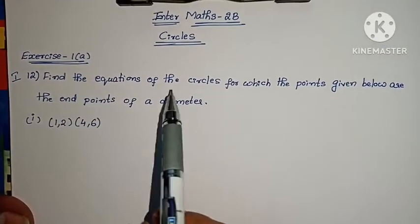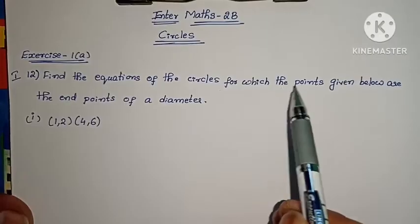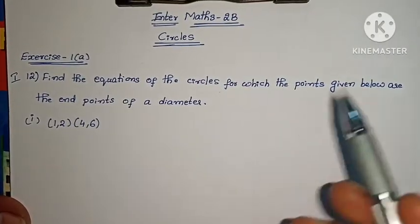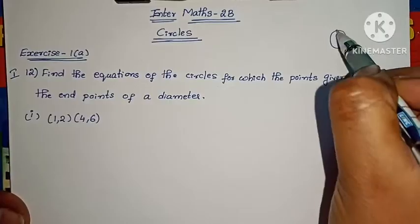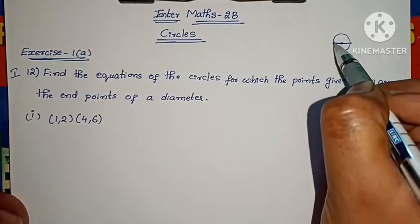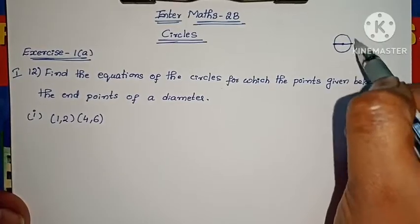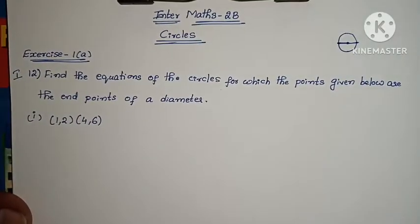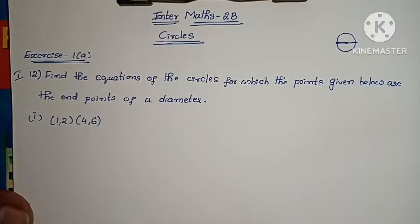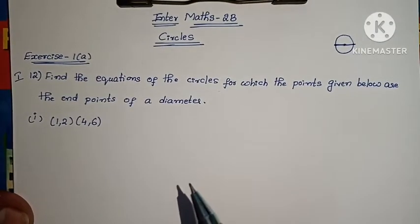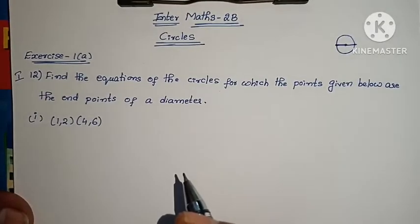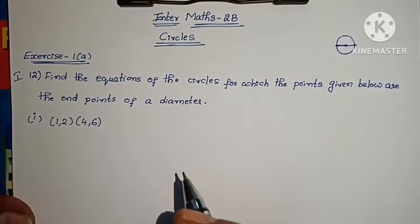Question 1: Find the equations of the circles for which the points given below are the endpoints of a diameter. If you have a circle, you have the diameter. The center is the midpoint of the diameter. The endpoints give us the equation of the circle. The formula is: x minus x1 into x minus x2, plus y minus y1 into y minus y2, equals 0.